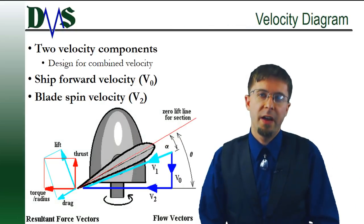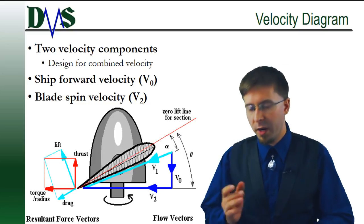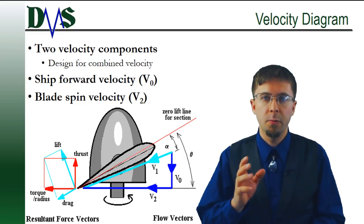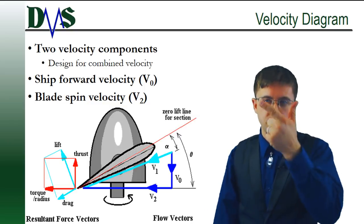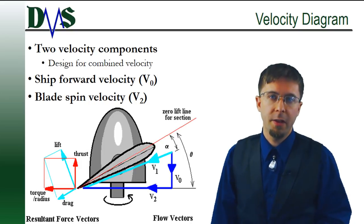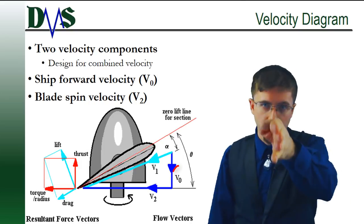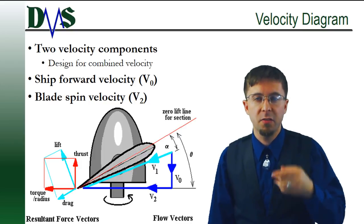Now before we can get into the design of propeller wings, we have to first focus on the direction of water velocity that the propeller blade sees. That's actually a bit of a complicated question. There are two components to the velocity. First, we have the velocity due to the ship traveling forward. But remember that at the same time that it's traveling forward, this propeller blade is spinning around very quickly.